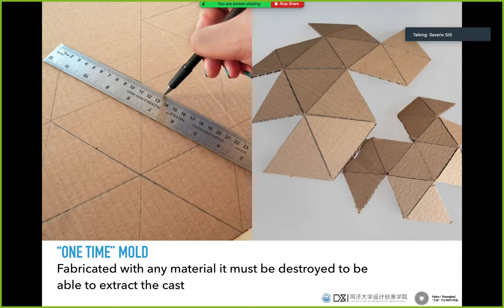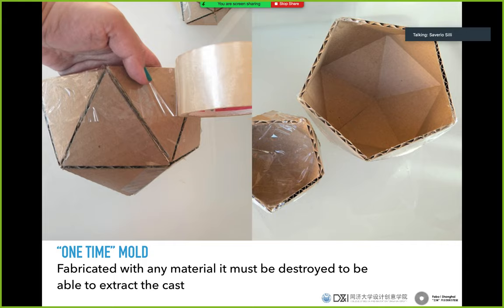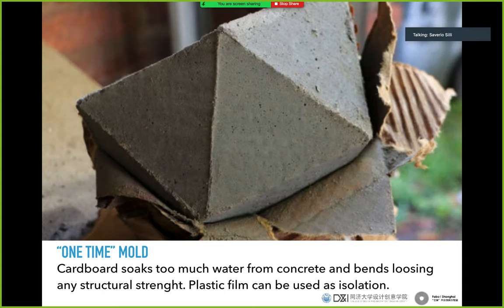Then there are one-time molds, which can be fabricated with any material but must be destroyed to extract the cast. In this case, this is a mold made with cardboard — cut by hand, but you can laser-cut this kind of mold — put together with tape, and used as a mold for concrete. Of course, to remove it you lose the cardboard, so it's a one-time thing.